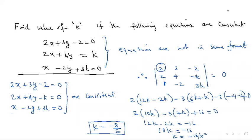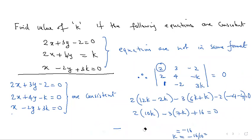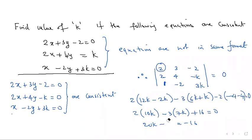Correction: the calculation gives 20k − 21k equal to −16, so −k = −16, which means k = 16. Wait — rechecking: 20k − 21k = −k, and that equals −16, so k = 16.